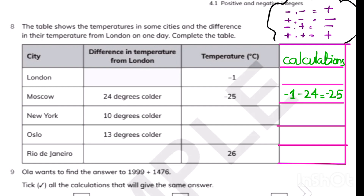In New York, it is 10 degrees colder than London. The difference is 10 degrees colder, so minus 1 and minus 10. Both negative signs — add the numbers: 10 plus 1 is 11, and the sign is also negative. So New York is minus 11.